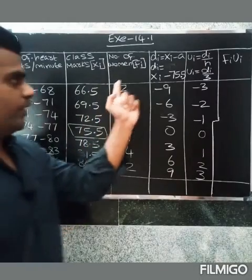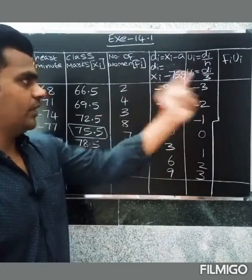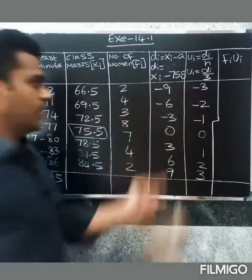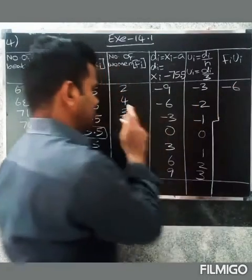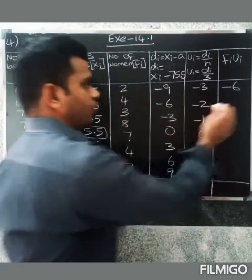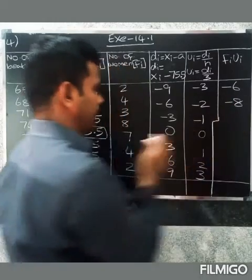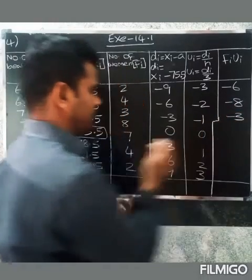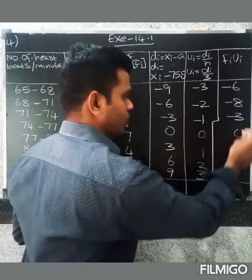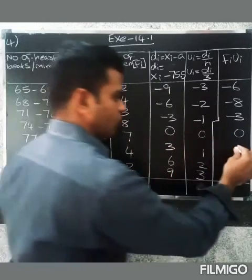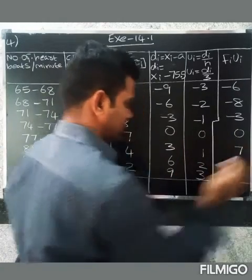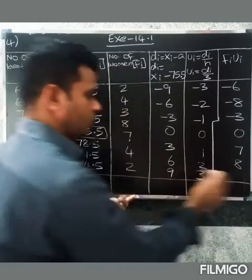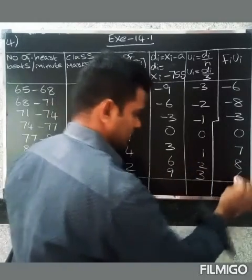Next, F multiplied by Ui: 2 into minus 3 equals minus 6; 4 into minus 2 equals minus 8; 3 into minus 1 equals minus 3; 8 into 0 equals 0; 7 into 1 equals 7; 4 into 2 equals 8; 2 into 3 equals 6.